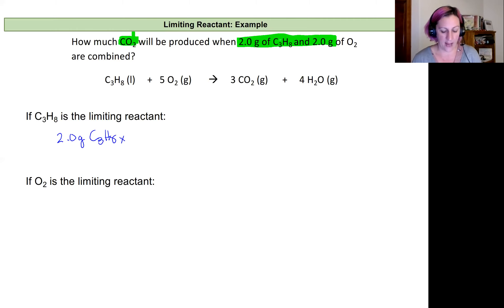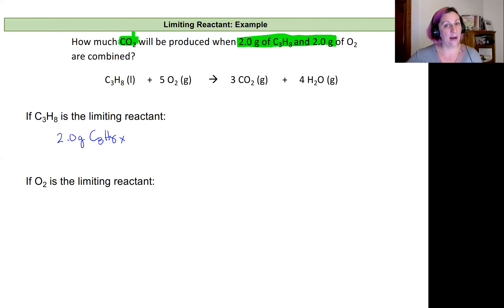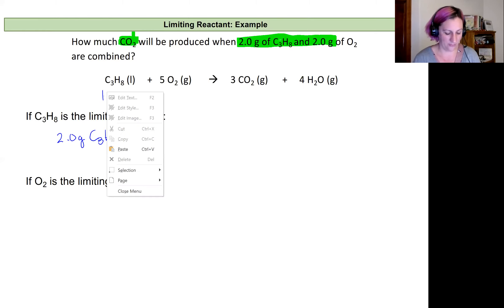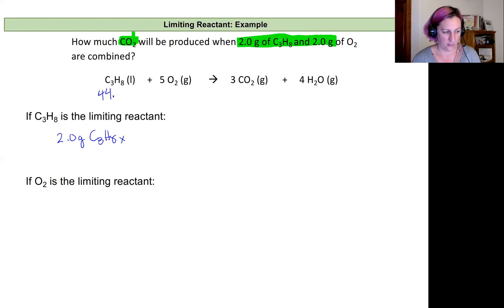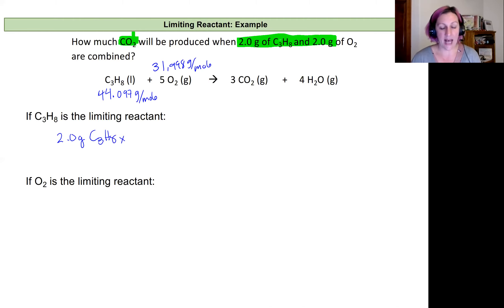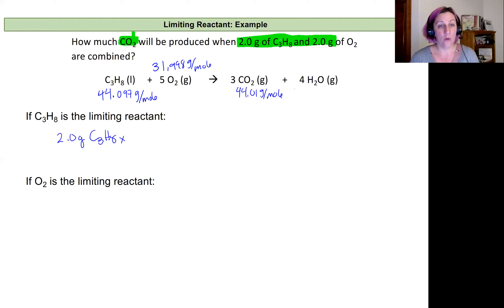One approach: assume propane is the limiting reactant and predict the amount of CO2 that forms, then assume oxygen is the limiting reactant and predict the amount of CO2 that forms, then compare — the smallest number will have been produced by the limiting reactant. Starting with propane: I have two grams of C3H8, and I'll convert that to moles of propane, then to moles of CO2, then to mass of CO2. The molar mass of propane is 44.097 g/mol, the molar mass of O2 is 31.998 g/mol, and the molar mass of CO2 is 44.01 g/mol.